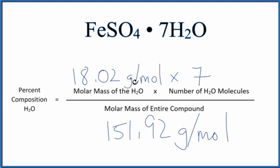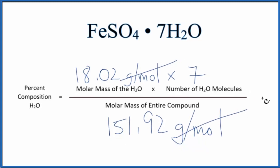So we multiply the 18.02 times seven, and then we get a number which we divide by the 151.92. When we do that division, grams per mole on the top and the bottom cancels out.